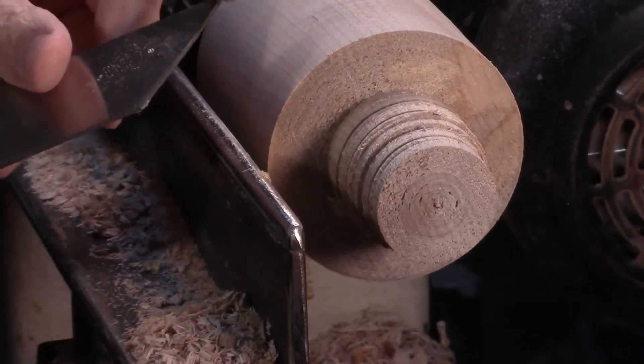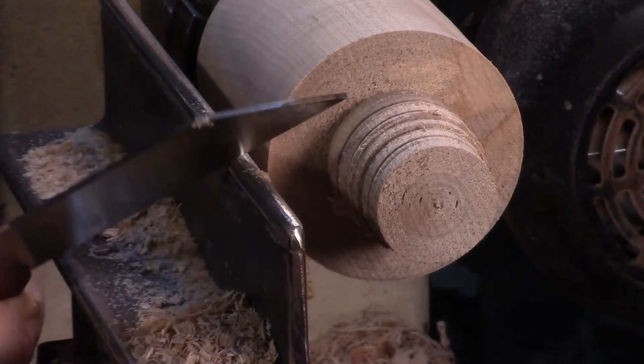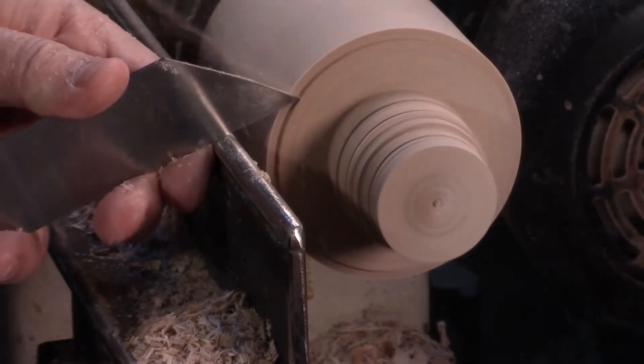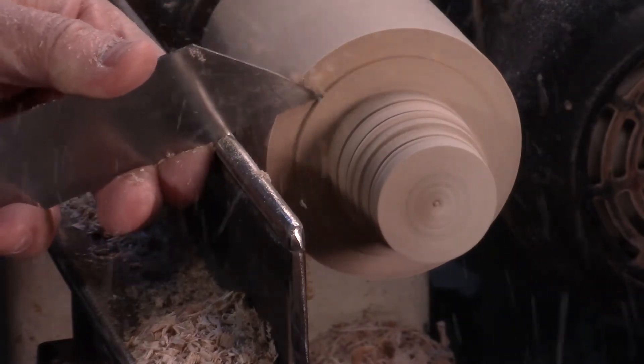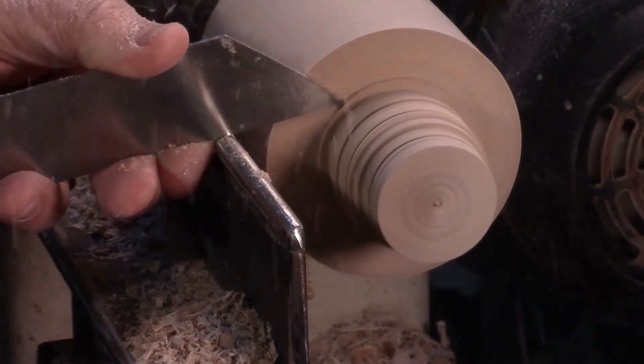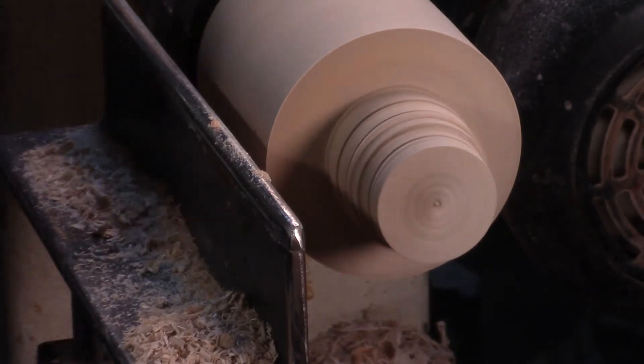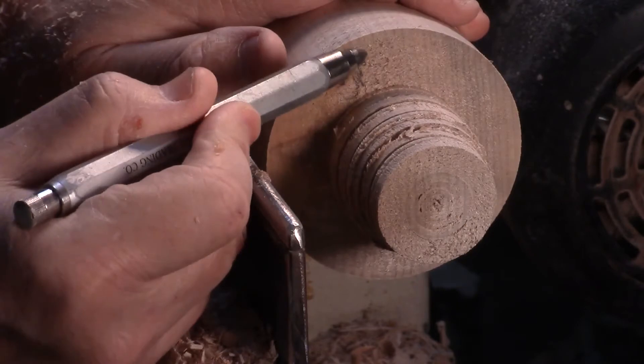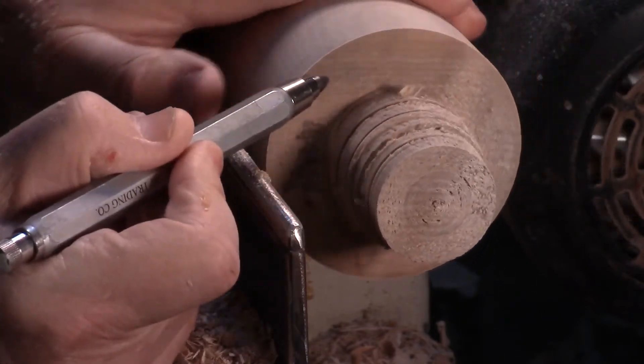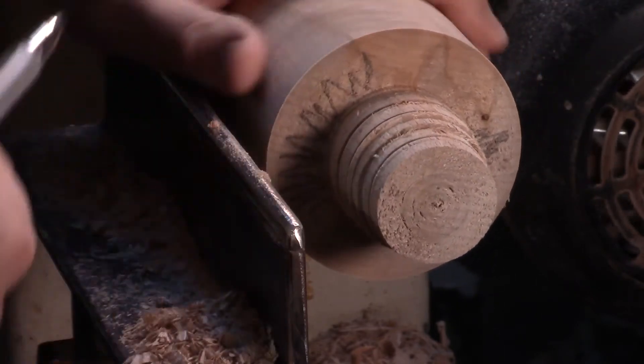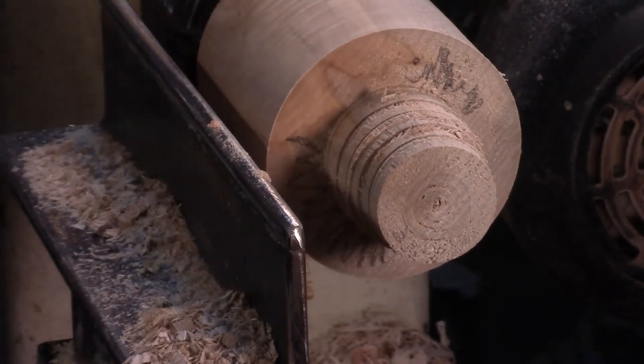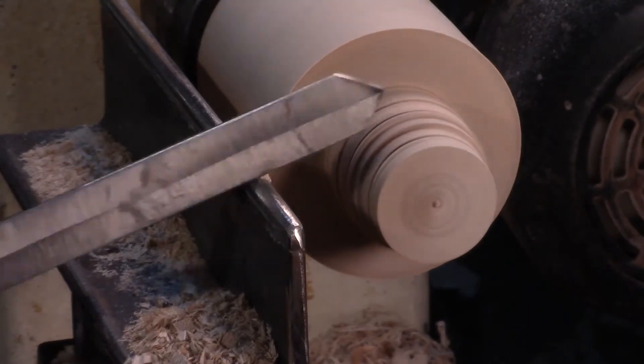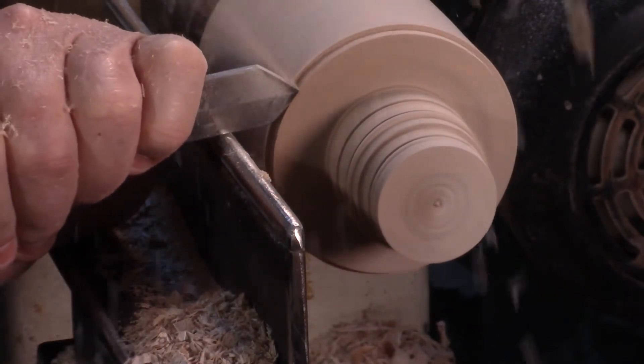Now I'm going to use a narrow parting tool. This one is about a sixteenth of an inch in width. And let's take a look at the surface left by the narrow parting tool. Once again, there's quite a bit of tear out. Probably more so than the fluted parting tool, not quite as much as a diamond parting tool. Okay, roughed the surface up again.